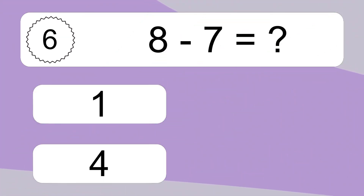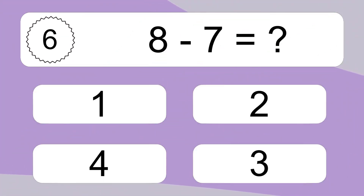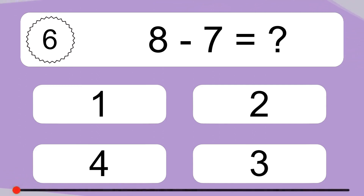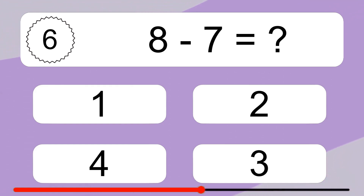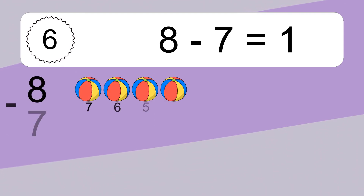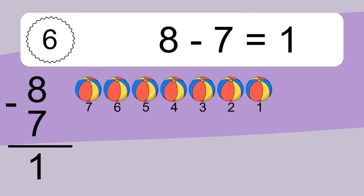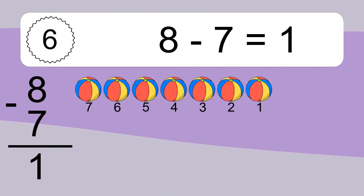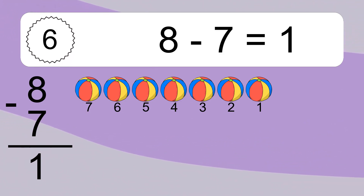8 minus 7 equals what? 8 minus 7 equals 1. Let's count it: 7, 6, 5, 4, 3, 2, 1.